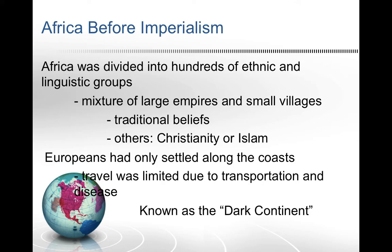During the age of exploration, Europeans had mostly only settled along the coast because that's all they needed for the slave trade — Africans themselves brought other slaves to be sold. Europeans never really explored the inner continent, so they referred to Africa as the dark continent. Travel was also limited due to lack of roads, and many diseases originating in Africa deterred Europeans from venturing inside.